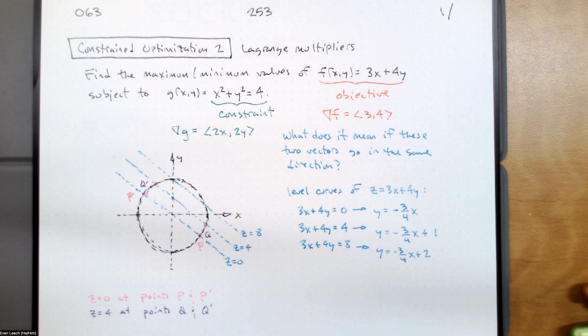That intersects the circle at two points. The value of the function at those two points — I call them p and p prime, they're antipodal points — is zero. So z = 0 at the points p and p prime.